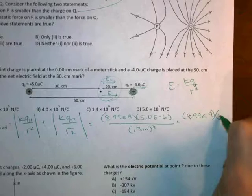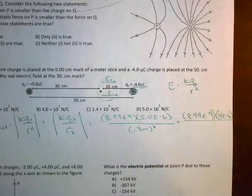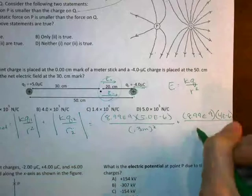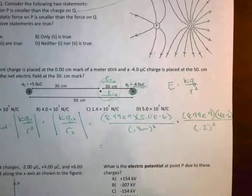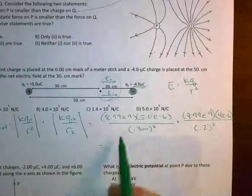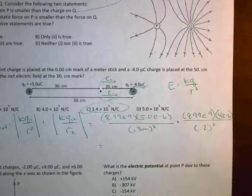8.99 times 10 to the ninth. And here my Q, and remember I'm going to ignore the negative, is 4 times 10 to the negative 6, 4 microcoulombs, and that distance is 20 centimeters. So that's 0.2 meters. And if you plug all this into your calculator, you get to the answer.